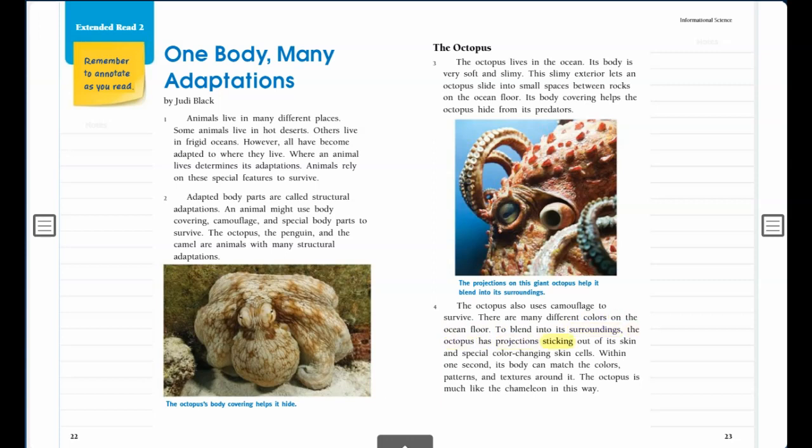The octopus also uses camouflage to survive. There are many different colors on the ocean floor. To blend into its surroundings, the octopus has projections sticking out of its skin and special color-changing skin cells. Within one second, its body can match the colors, patterns, and textures around it. The octopus is much like the chameleon in this way.